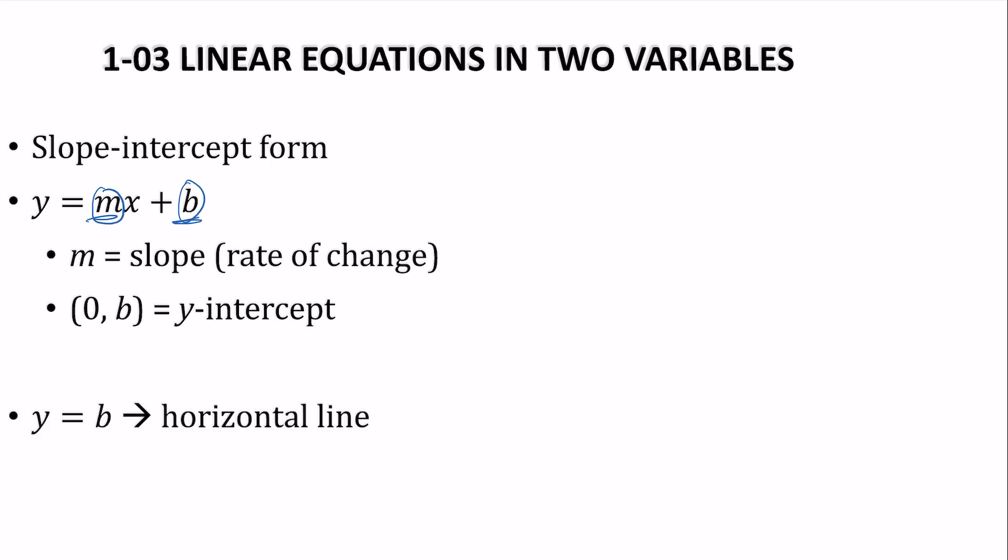Horizontal lines are in the form y equals a number, which would also be the y-intercept, and vertical lines are x equals a number.